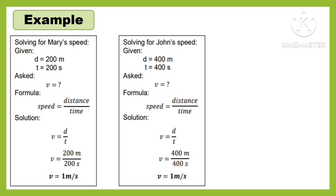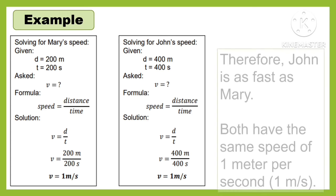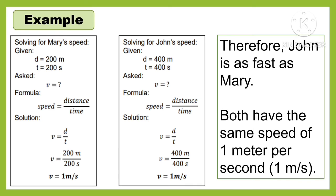Now let us solve for Jan's speed. The given is the distance and the time. Distance is equivalent to 400 meters, and the time is equivalent to 400 seconds. What is asked in the problem? It is the speed. The formula of speed is distance divided by time. So 400 meters divided by 400 seconds — the answer is 1 meter per second. Therefore, Jan is as fast as Mary. Both have the same speed of 1 meter per second.